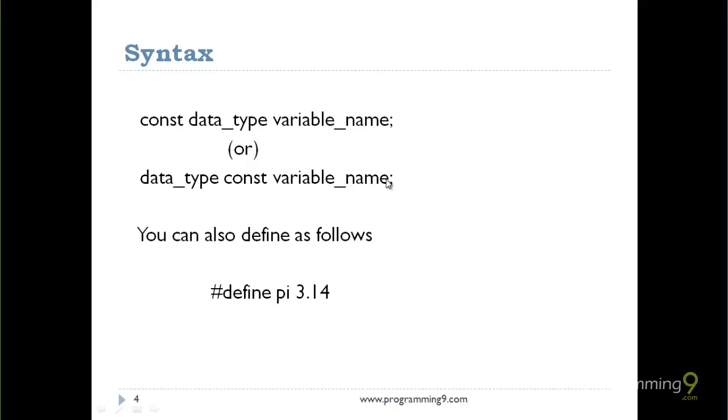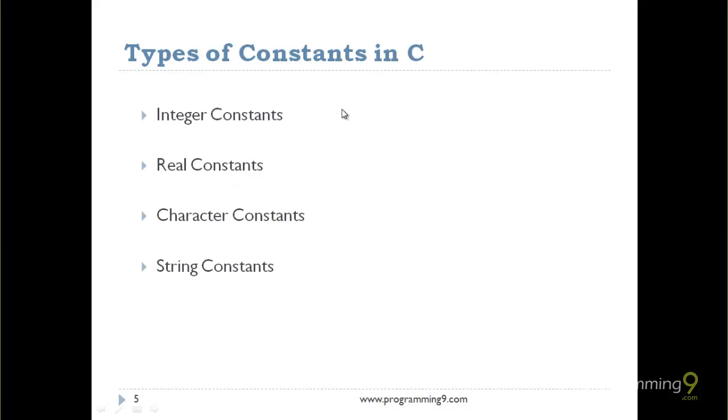You can also define constants using #define, like #define pi 3.14. The condition is you should define this variable on the top of the main, whereas the const keyword can be used at any location in the C program.